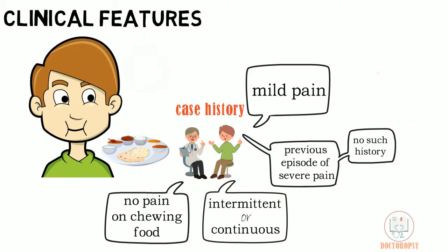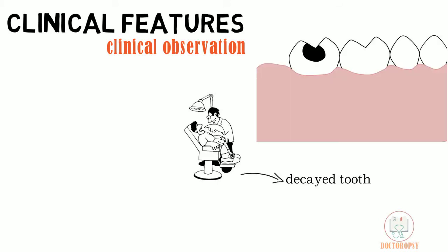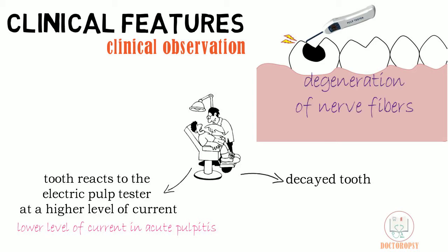On clinical examination, a tooth with a large carious cavity is seen, in which thermal and electric pulp tests are positive. In the electric test, the pain is felt at a higher current level, unlike the case of acute pulpitis. This may be because of the long-standing disease process which has caused degeneration of the nerve fibers in the pulp.